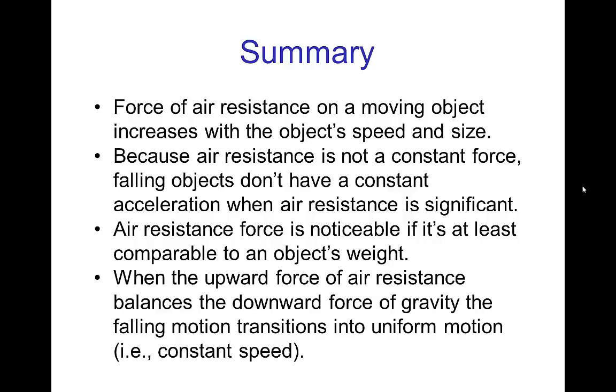And for a falling object, once the upward force of air resistance balances the downward force of gravity, then the falling motion transitions into uniform motion at a constant speed. So we'll actually go into a little more depth about this constant uniform speed of falling objects. We call that the terminal velocity. So there'll be another tutorial that describes that in a little bit more detail. See you then.